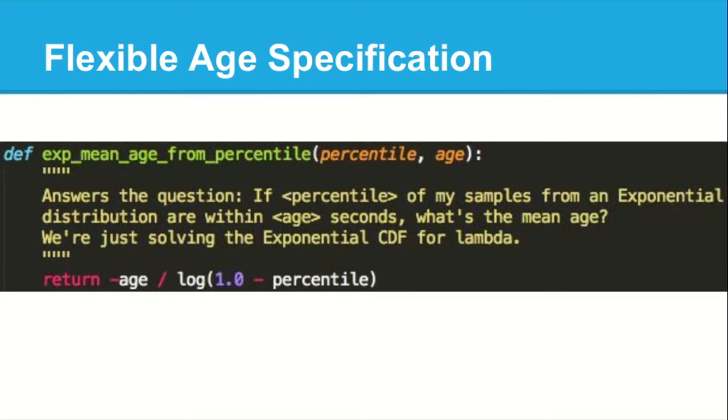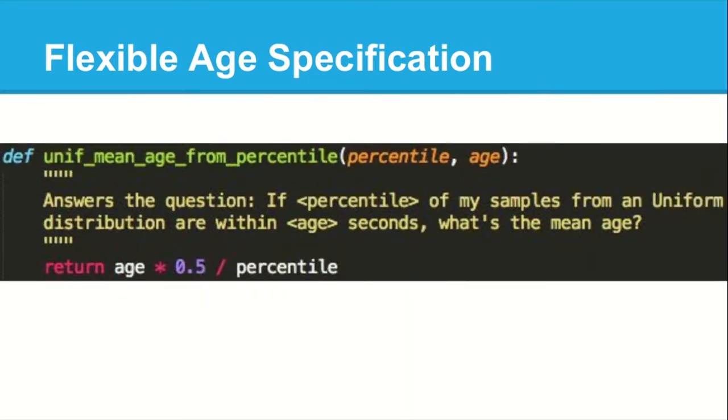Up to now, you explicitly specify what mean age you want. But let's say you have a more complicated request — like you want 90% of your samples to be within the past hour, and you don't know what mean age that corresponds to. For both the exponential VERB and the uniform VERB, we have equations for that. If you know the CDF of the distribution, it's relatively easy.